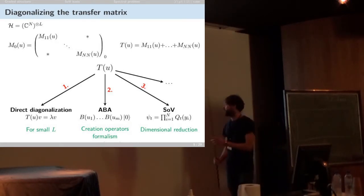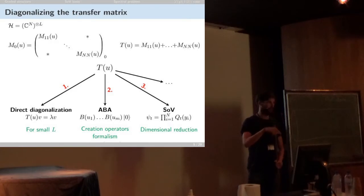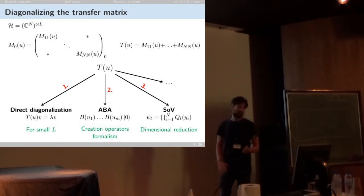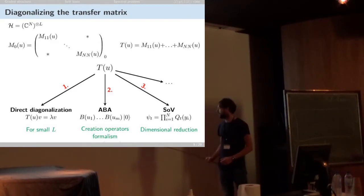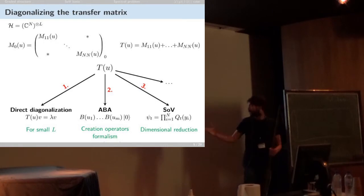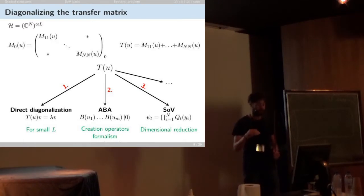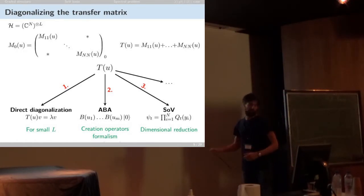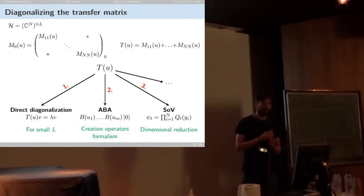To diagonalize the transfer matrix — just the trace of the monodromy — the direct approach fails because the matrix has size N to the power L. That's why we have the algebraic Bethe ansatz, where the algebraic version is basically creation of a state on some pseudo-vacuum. But it doesn't always work: for some models you cannot find a pseudo-vacuum state, and for higher-rank models you have nested Bethe equations, making the construction difficult. So there is room for the quantum separation of variables approach, pioneered by Sklyanin at the end of the last century.